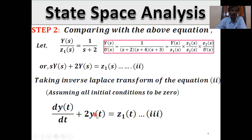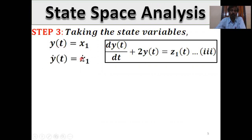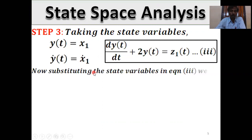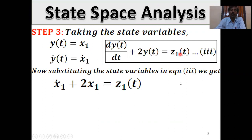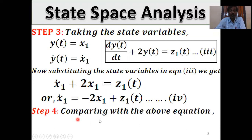y(t) is the position and dy(t)/dt is the velocity. So put y(t) = state variable x1. Differentiating both sides: ẏ(t) = ẋ1. Substituting back: ẋ1 + 2x1 = z1(t), so ẋ1 = −2x1 + z1(t). This is the first state equation.